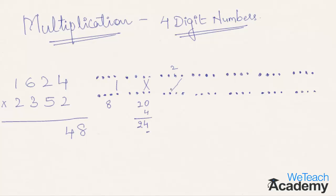In the third step, multiply the unit digit with the hundreds digit of the other number and follow the pattern. Here 6 into 2 is 12, 3 into 4 is 12, and 5 into 2 is 10. So 12 plus 12 plus 10 gives 34, plus the 2 carried forward gives 36. Write 6 in the final answer and carry 3 to the next step.